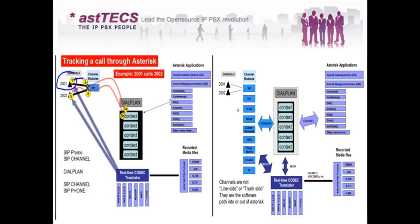One more important thing to keep in mind: channels are not line-side or trunk-side — they are software paths into Asterisk. We don't need to worry about whether 2001 is the line side using a channel module and the trunk side is a BRI. Asterisk does not make that distinction — it just uses the dial plan and whatever combination of channel modules we want, however we want to do it.